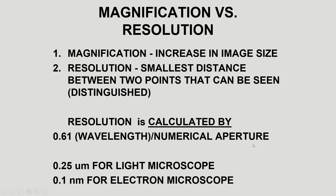Here is the equation for resolution: 0.61 times the wavelength over the numerical aperture. The key thing to notice is the wavelength. With the naked eye you can see down to the millimeter level; with a light microscope you can distinguish down to the micrometer level; and with electron microscopy you can see down to the nanometer level. The different wavelengths are what make this difference — the wavelength of light is much greater than the wavelength of an electron.